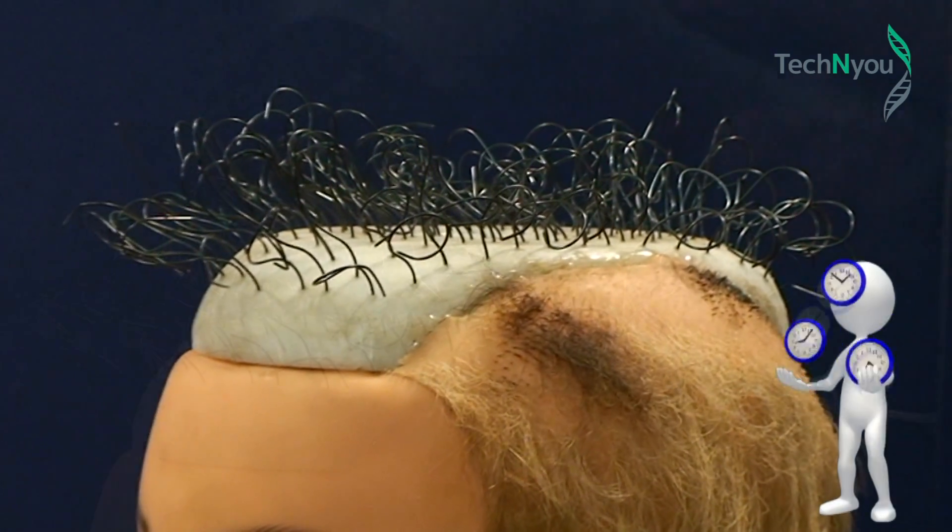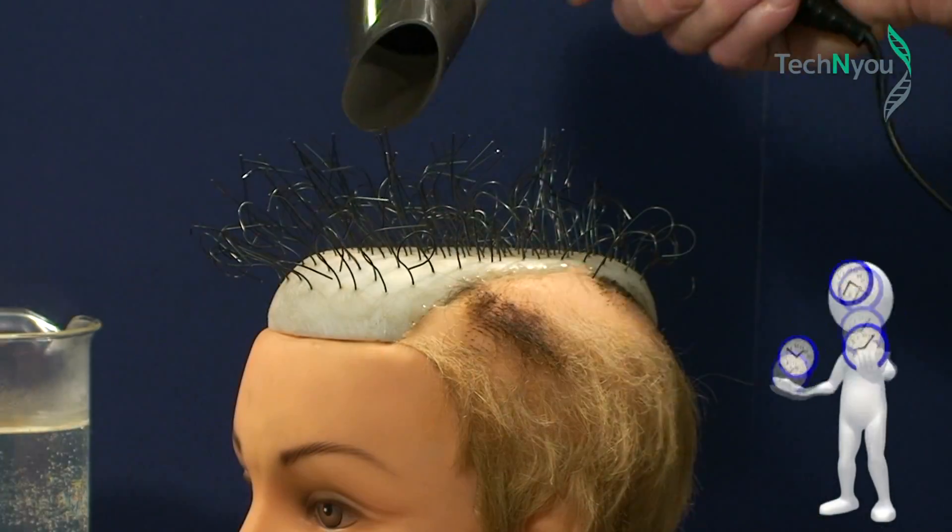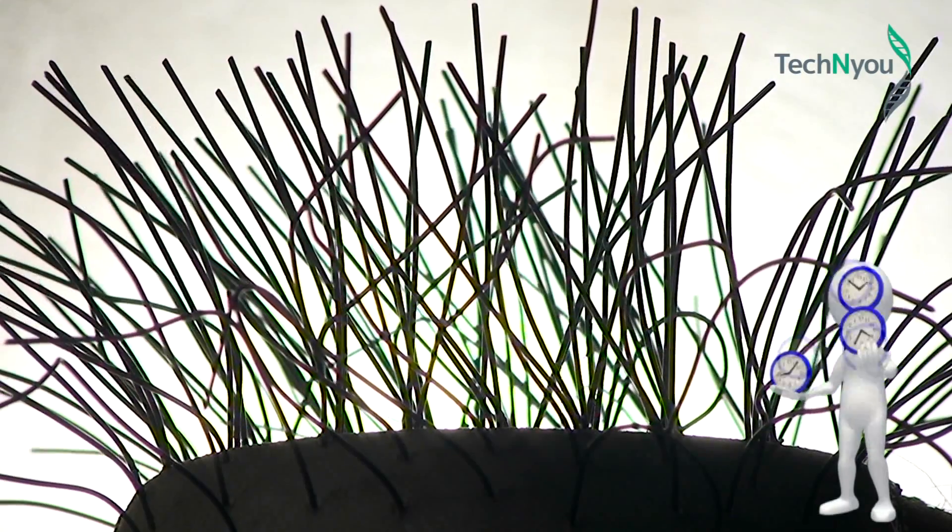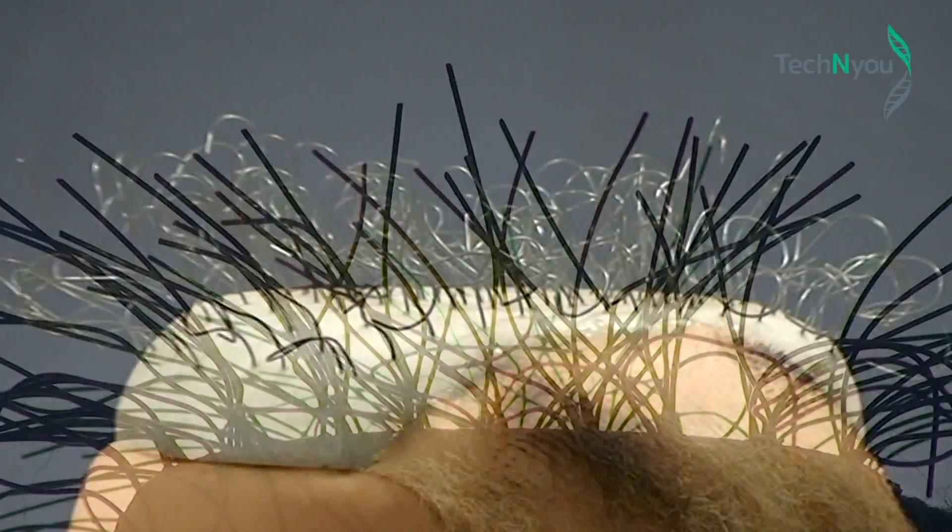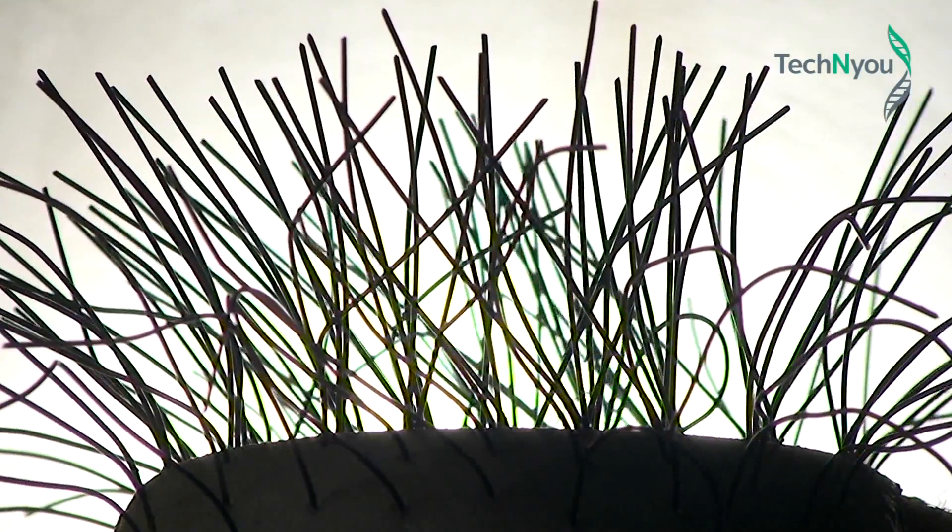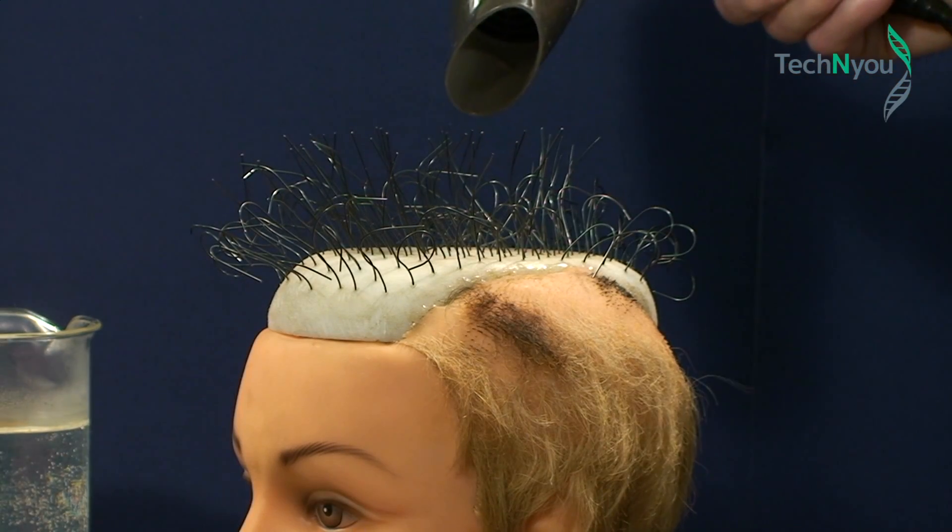Watch what happens when we pass hot air over these curls. Well, so much for the Nitinol perm. We've just seen the same behavior. The Nitinol hair remembered its pre-programmed shape, and with a little encouragement from our hair salon and the right temperature, it just snapped back straight again.